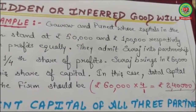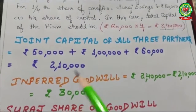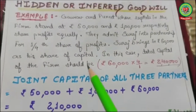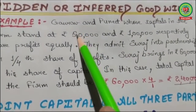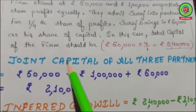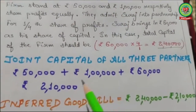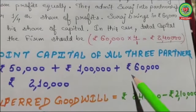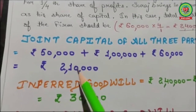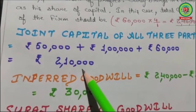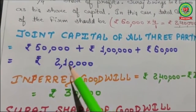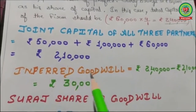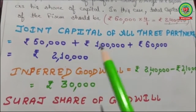Now find the joint capital of the firm — the actual capital after contribution of all three partners. Gaurav's capital fifty thousand, Puneet's capital one lakh, and Suraj's capital sixty thousand. Total joint capital is two lakh ten thousand. Now we compute the inferred goodwill.